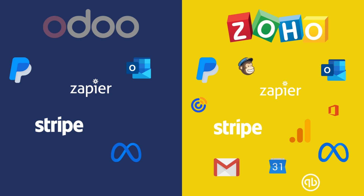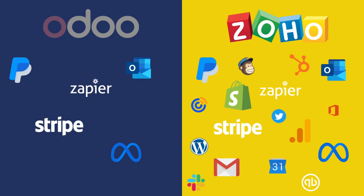Zoho also integrates with Meta for Business, Microsoft 365, Microsoft Outlook, QuickBooks, HubSpot CRM, Shopify, Slack, Twitter, WordPress, Xero, and Zendesk.